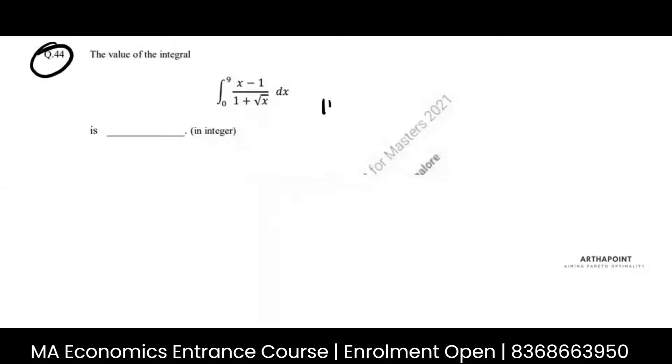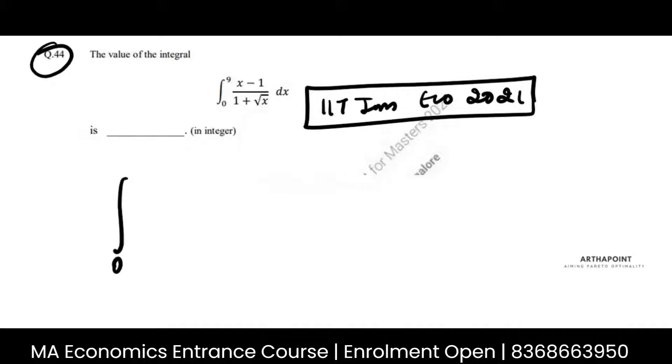This is question number 44 of IIT JAM Economics 2021 paper. Let's see what the question is saying. You have to find the integral of 0 to 9, x minus 1 over 1 plus root x dx.